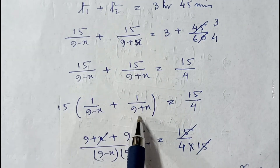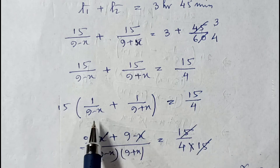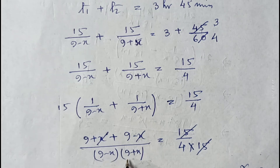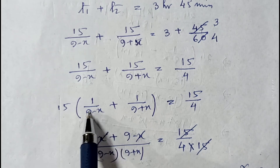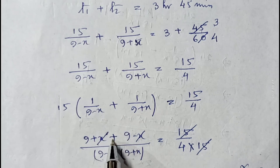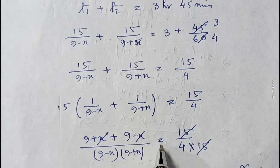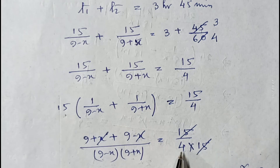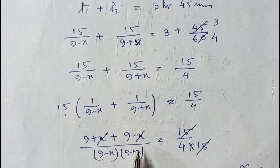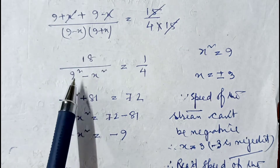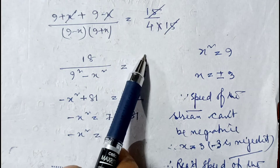Taking LCM (9 minus x)(9 plus x) on the left side: [(9 plus x) + (9 minus x)] / [(9 minus x)(9 plus x)] = 1/4. The numerator simplifies to 18, and the denominator is 9² minus x² = 81 minus x². So 18/(81 minus x²) = 1/4.